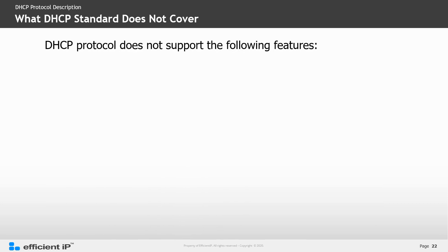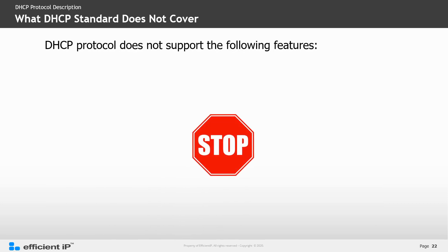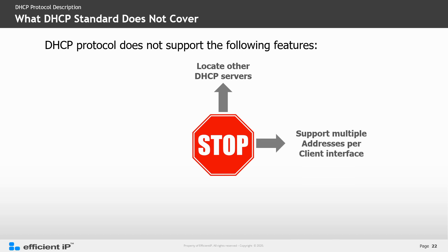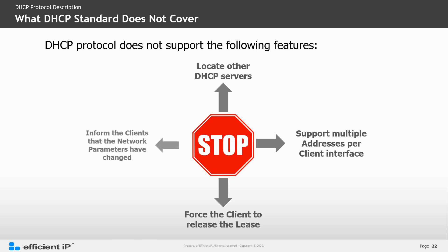What the DHCP standard does not cover includes: the ability for DHCP servers to locate each other, support for multiple addresses per client interface, the ability for the DHCP server to force clients to release their lease, and a method to inform clients that network parameters have changed, such as a router or domain name.